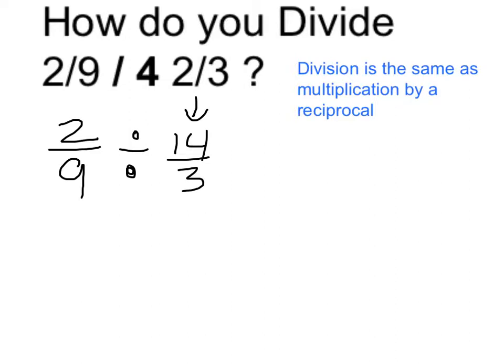Now, to take the reciprocal, it's going to be two-ninths times three over fourteen. I want to look for ways I can simplify. Three and nine are both divisible by three, so that reduces to one and three.